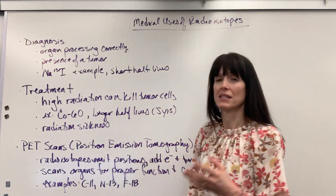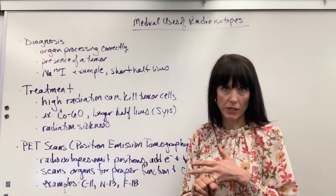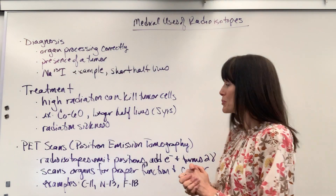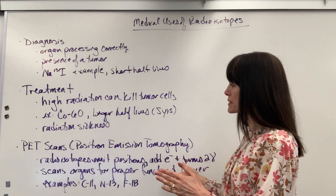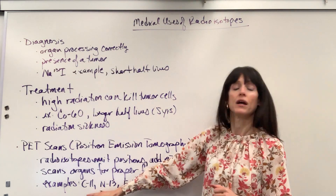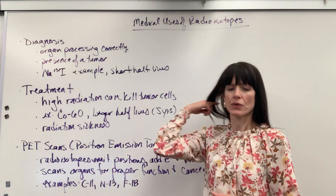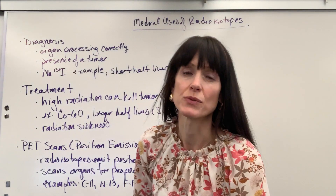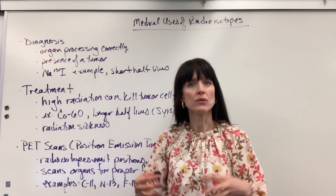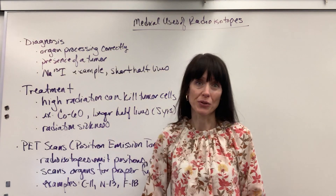PET scans are also used to detect the presence of tumors and to monitor cancer treatments — are those tumors shrinking or completely going away? Some examples of radioisotopes used for PET scans are carbon-11, nitrogen-13, and fluorine-18. These are amazing applications of nuclear chemistry to medicine, which we call nuclear medicine.